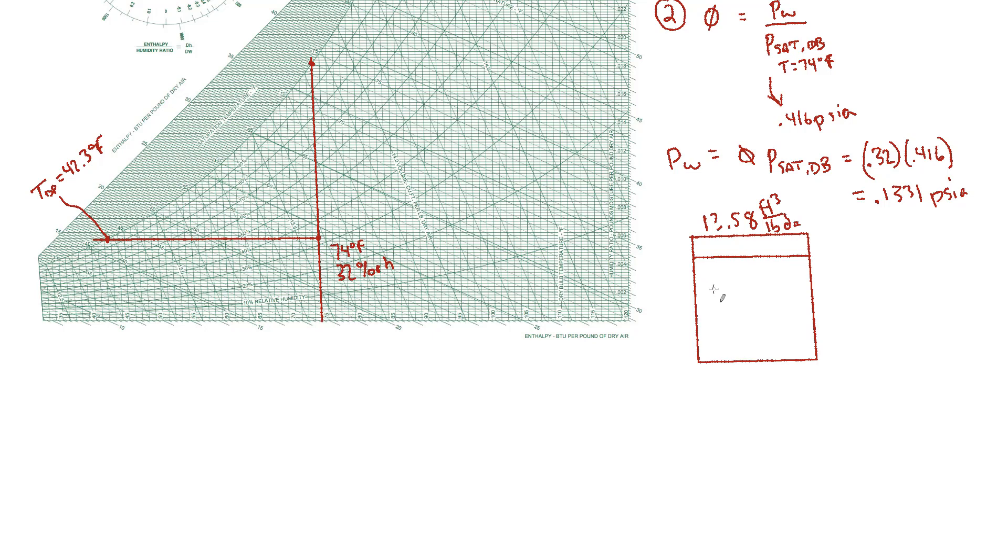So out of that 13.58, 13.45 of the cubic feet is dry air. So it's some mixture of nitrogen, maybe four parts nitrogen for every one part oxygen, approximately. And that's all just dry air, specifically one pound of dry air. And in the remaining volume, you have 0.13 cubic feet of water vapor, H2O.